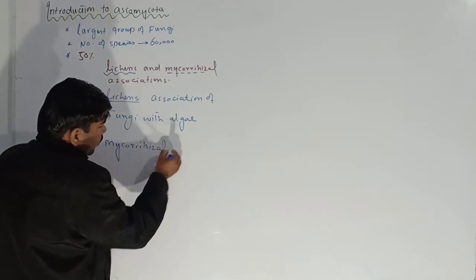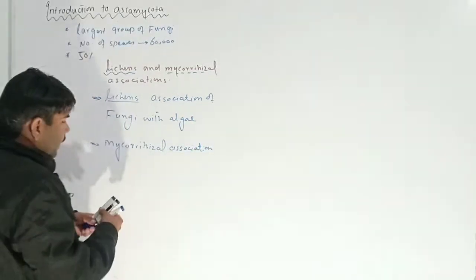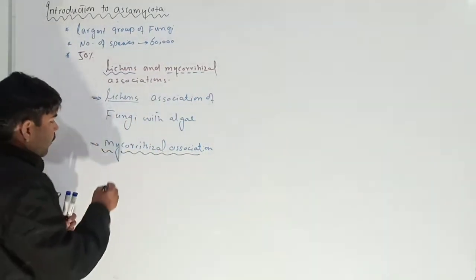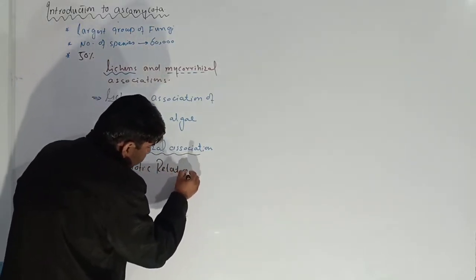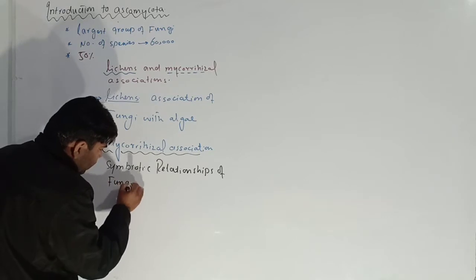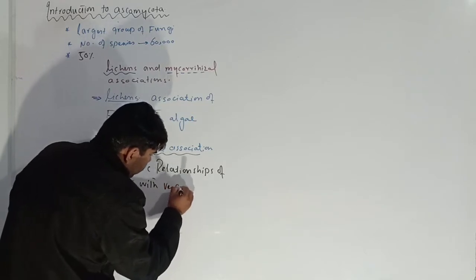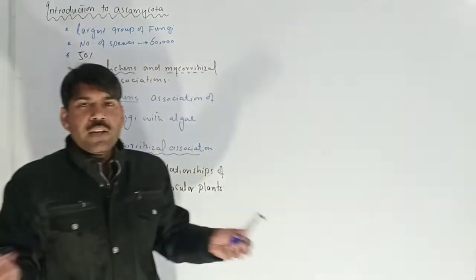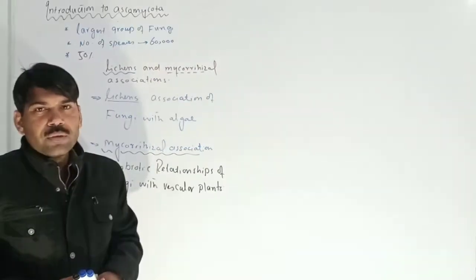The second living style is mycorrhiza, or mycorrhizal association. Mycorrhiza is the symbiotic relationship of fungi with vascular plants, also called higher plants. When fungi are living with vascular plants, such an association is known as a mycorrhizal association.